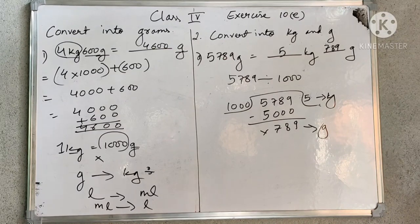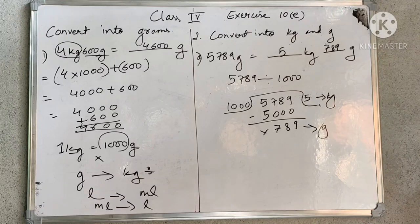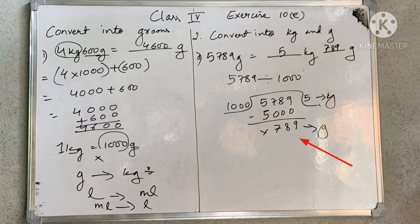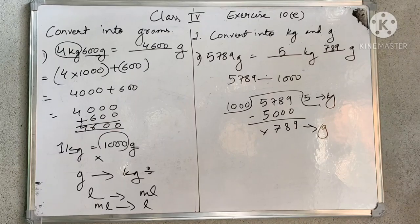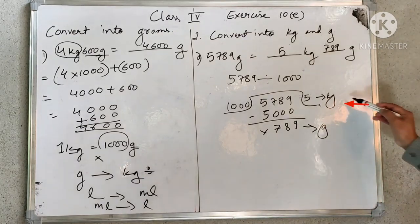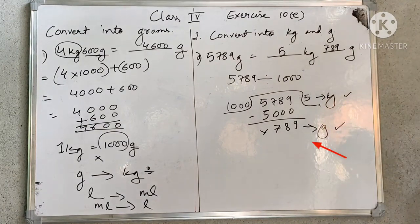When you are converting small to big, we need to divide. So here we will be dividing by 1000. When you divide 5789 by 1000, we get 1000 into 5 is 5000 and the remainder is 789. We cannot divide it further — 789 is smaller than 1000, so that is our remainder. Your quotient part will be kilograms and the remainder part will be grams.